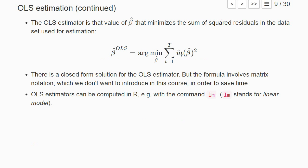We sum up the squared residuals for any beta hat and choose that vector of beta hat that minimizes this sum of squared residuals. And that's the OLS estimator.